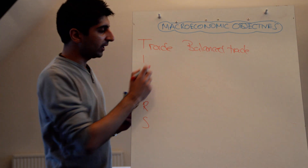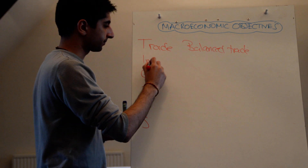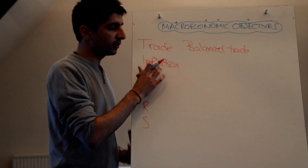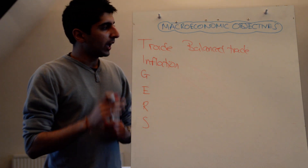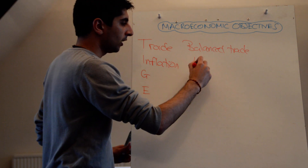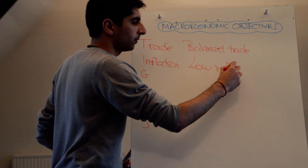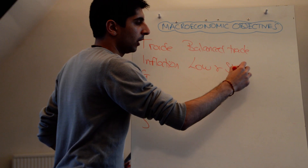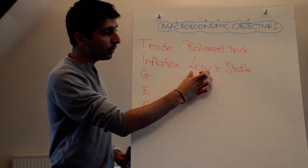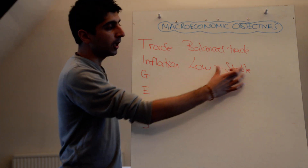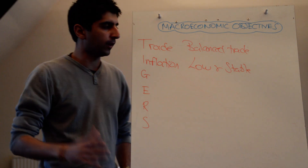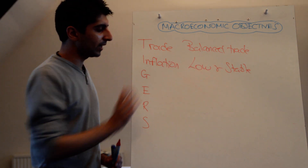I is for inflation. Governments very much target inflation. What is the objective here? Low and stable. A certain level of inflation is deemed acceptable — low inflation is deemed acceptable — but as long as it's stable. Not high, not rampant, not accelerating. Low and stable inflation.